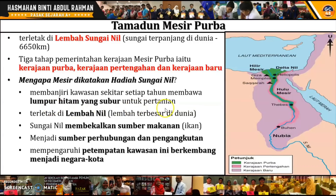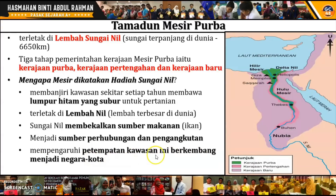Selain itu, Sungai Nil juga menjadi sumber perhubungan dan pengangkutan. Yang terakhir, Sungai Nil mempengaruhi pertempatan kawasan ini hingga berkembang menjadi negara-negara kota di sepanjang sungai, contohnya Memphis dan Tebis. Itulah antara bandar-kota yang muncul berdekatan dengan Sungai Nil.